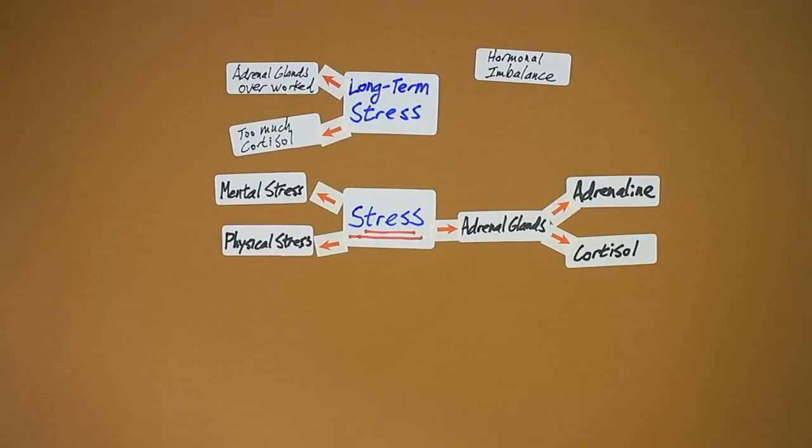Hormonal imbalances are also another thing that we tend to suffer from in long-term stress, because your body is so busy producing what it needs to cope with the stress, basically the cortisol hormone, that it neglects the production of other essential hormones, stuff like estrogen, progesterone, testosterone, DHEA, and the whole range of other hormones that we need get sacrificed, because the body is very efficient at coping with stress.